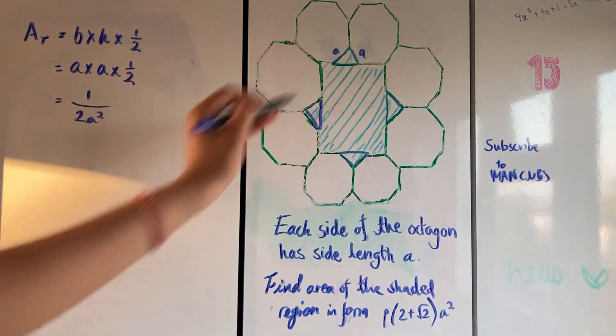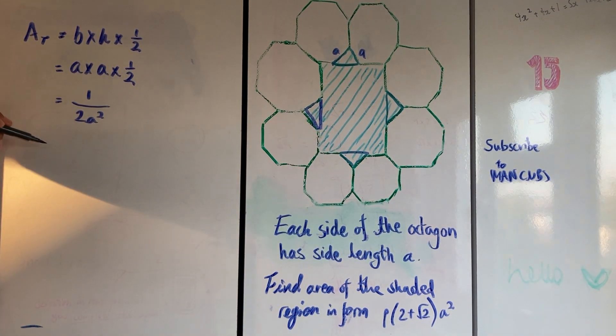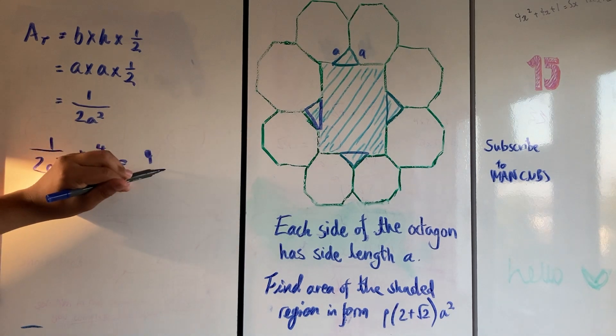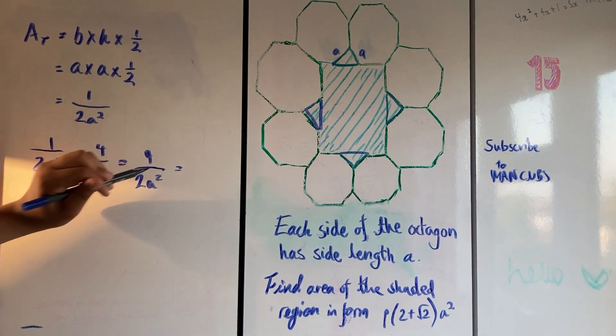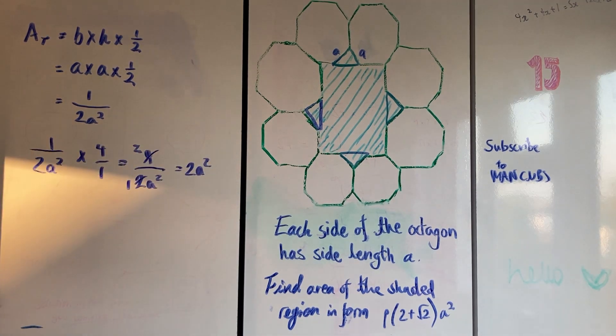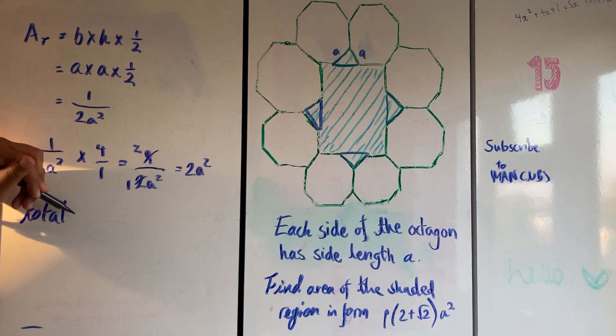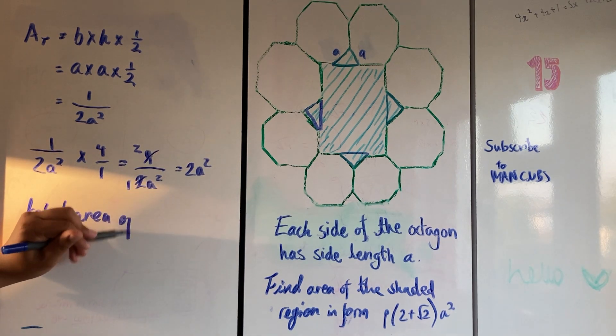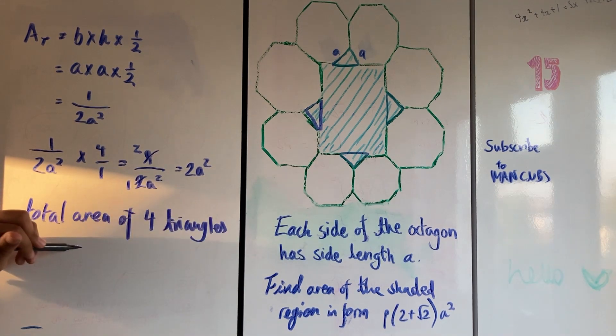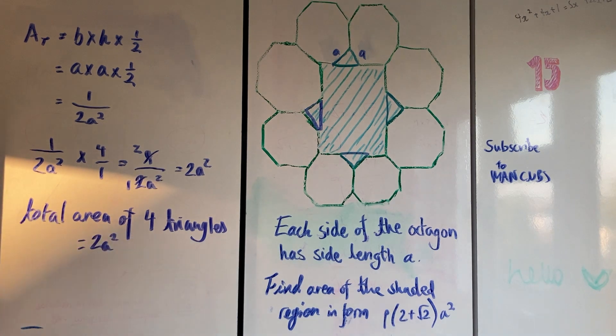Since we have 4 of them, we can multiply a²/2 by 4 to get the entire area of those 4 triangles. I'm writing it as 4/1 to make it easier to visualize. Before I cross multiply, I'll simplify since it's not very difficult numbers. The 4 becomes a 2 and the 2 becomes a 1 because we divide by 2, and we end up with 2a² which is quite nice for the entire area of the 4 triangles.